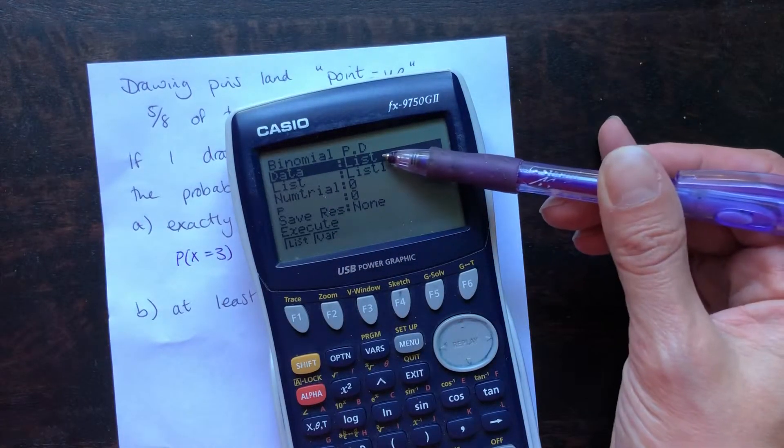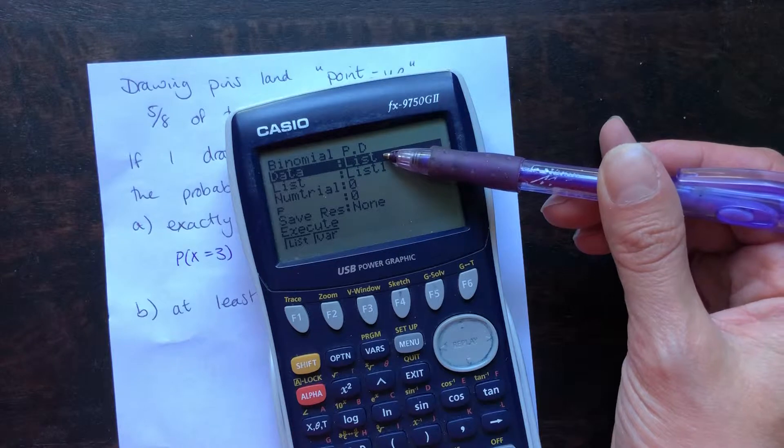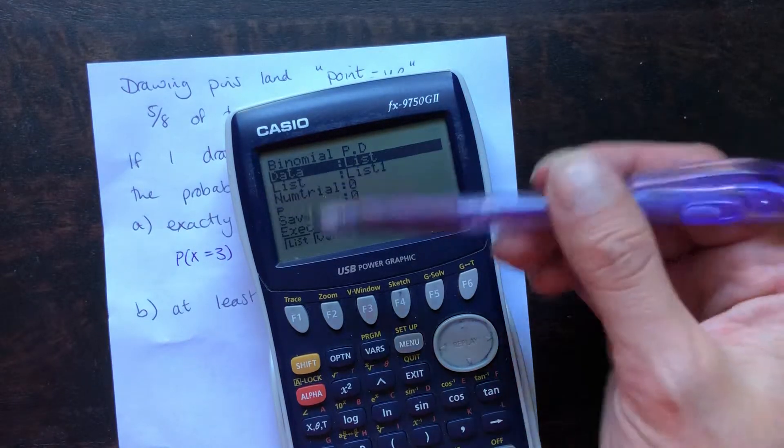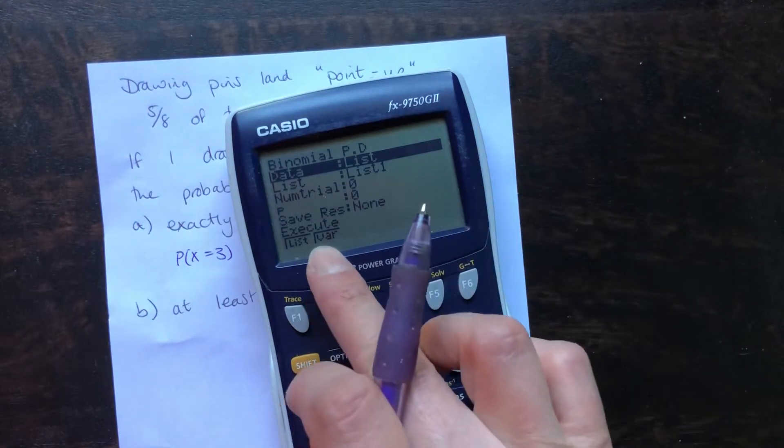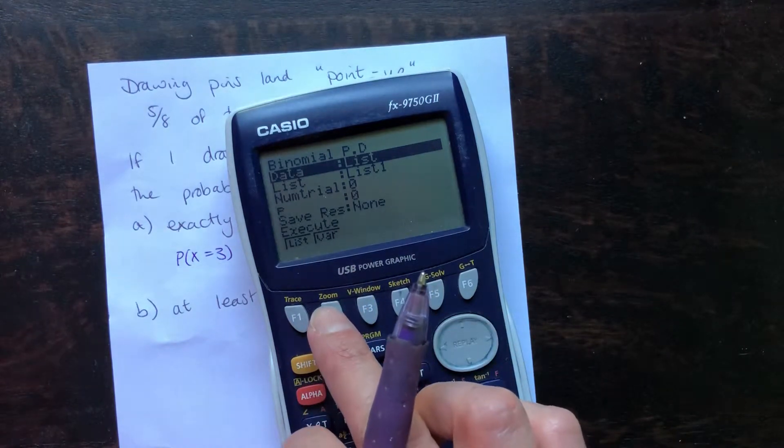First of all, we don't want LIST here, because LIST tells our calculator to read the information from a list of data that's in it, and there isn't one. So, we want to enter variables, so we need to press this F2 button.